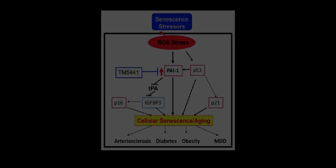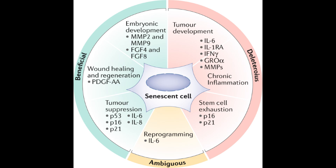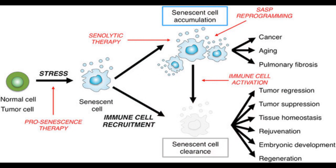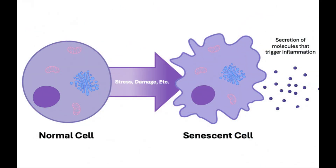Cellular senescence occurs when cells stop dividing, entering a stagnant phase that prevents damaged cells from proliferating. While this process can protect against cancer, senescent cells that tend to accumulate over time secrete inflammatory factors that have the potential to damage surrounding tissues and even influence other cells into becoming senescent themselves.